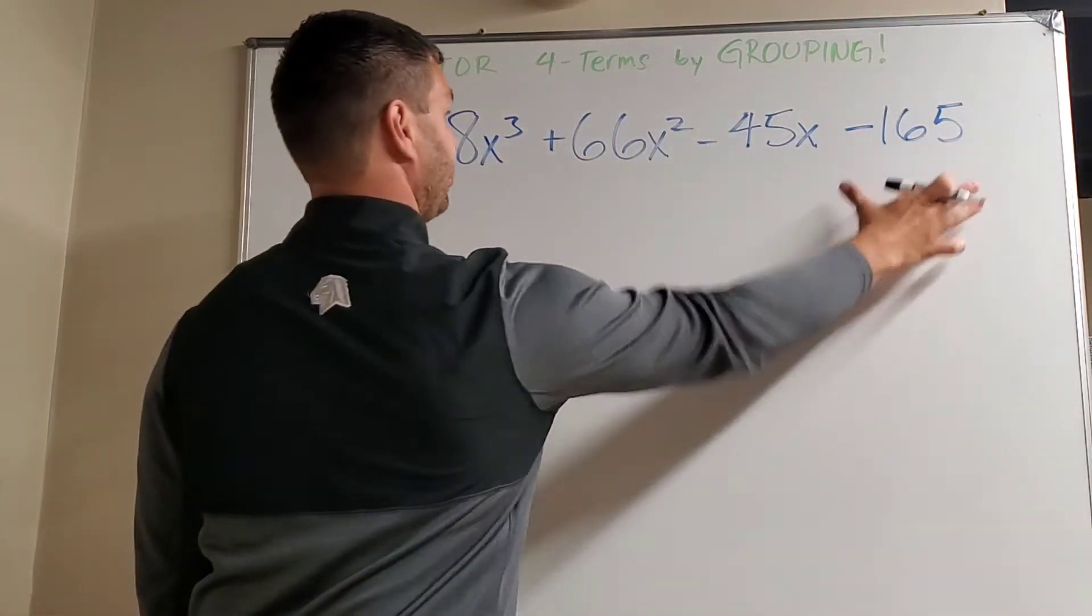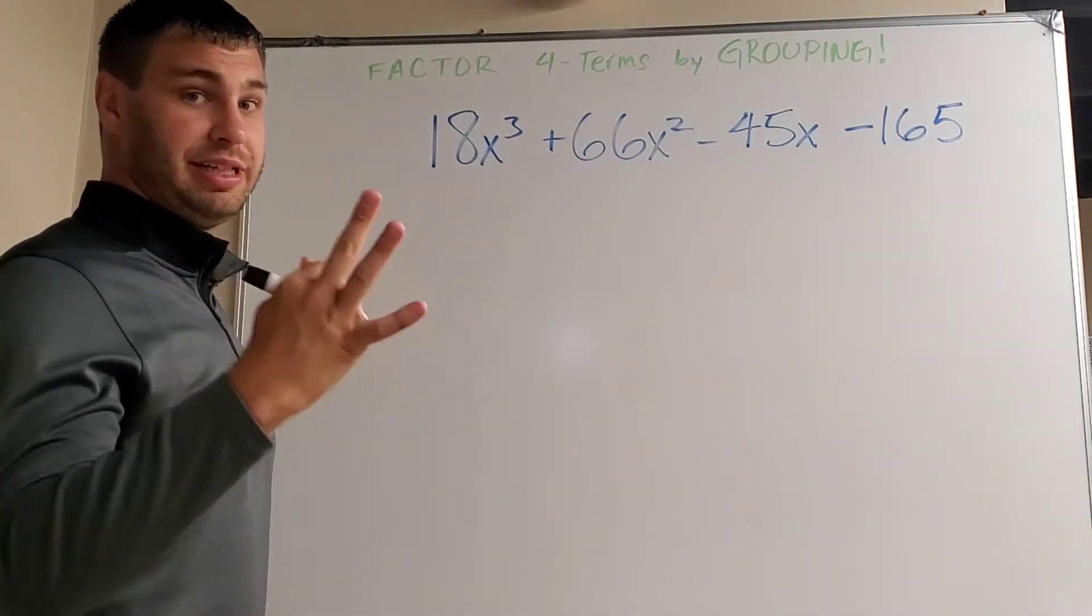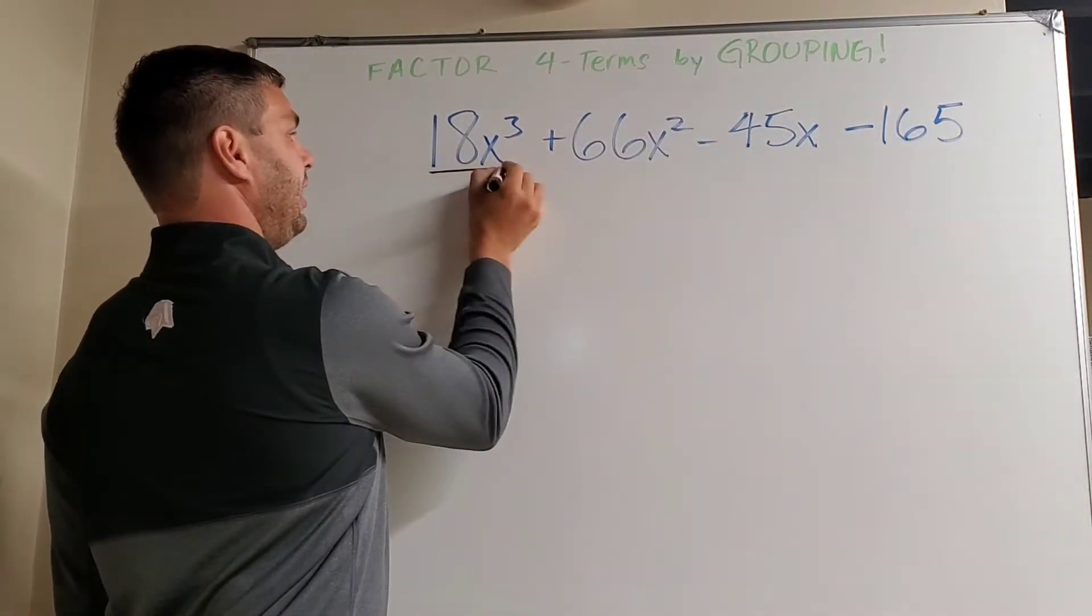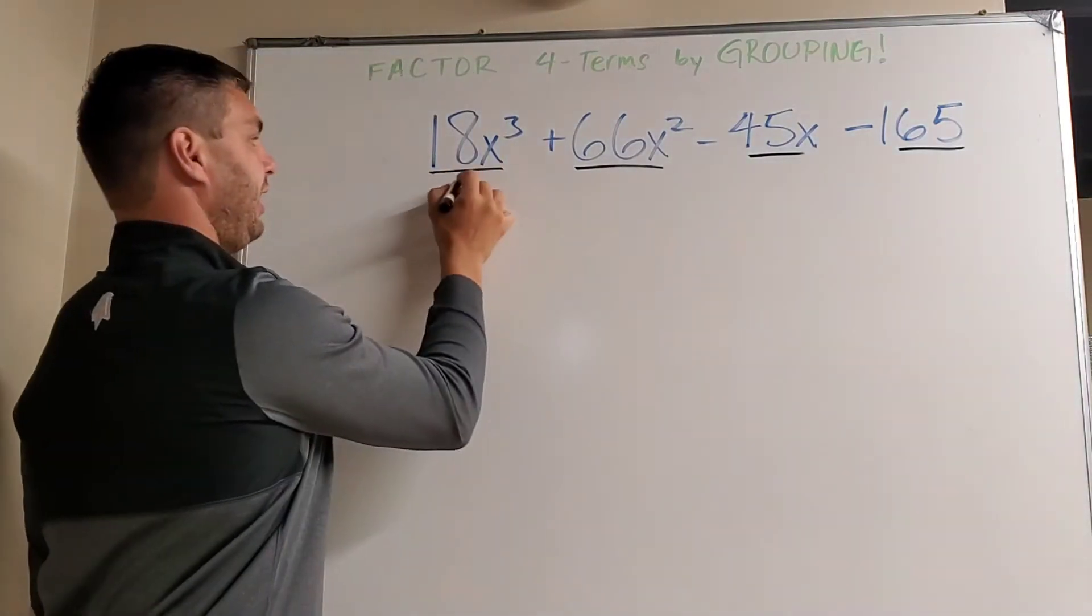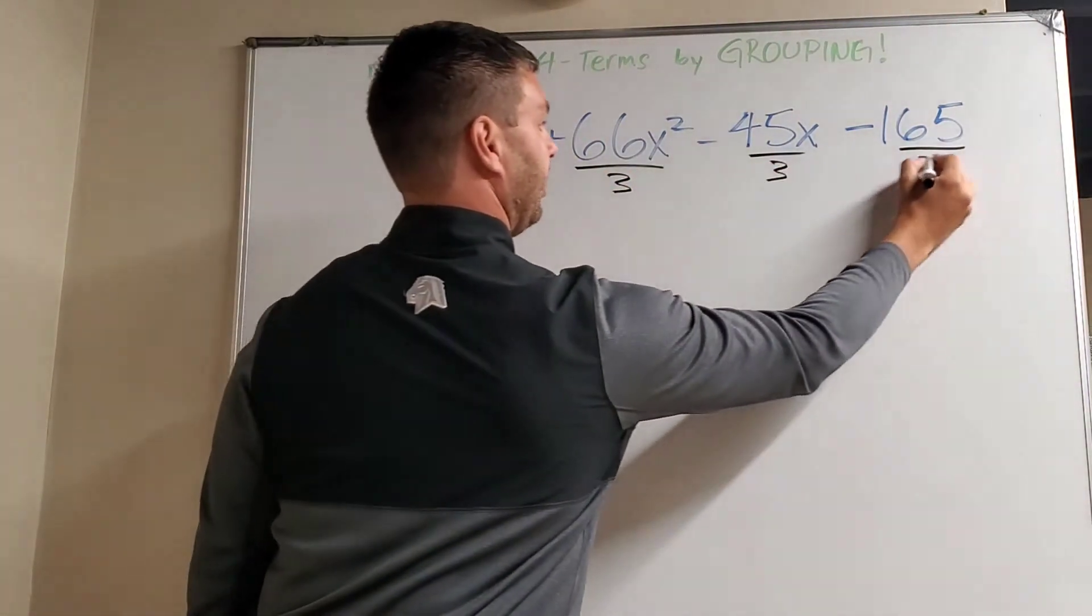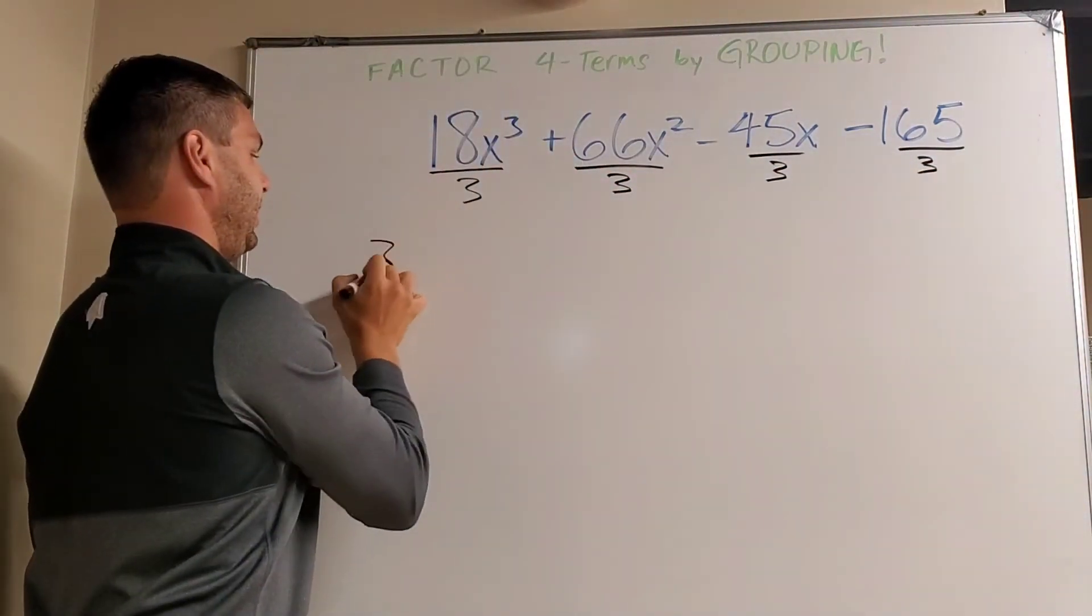In this case, I notice all of these are divisible by three, so I'm going to take out a three. If it helps you, you can put a little division sign and divide each of these by three. Then take that three, put it on the outside of a set of parentheses,